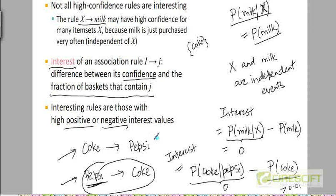For the purposes of this lecture, we are going to focus on high confidence rules. That is, if the items participating in an association rule are frequent item sets and the confidence in that rule is high, then we can more or less say that this rule is going to be useful for us, although we know there could be exceptions.